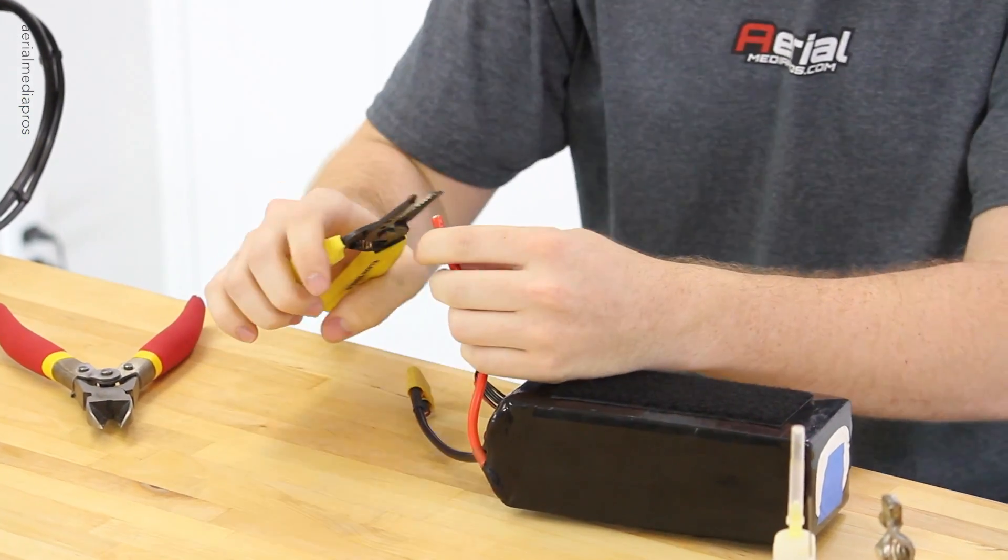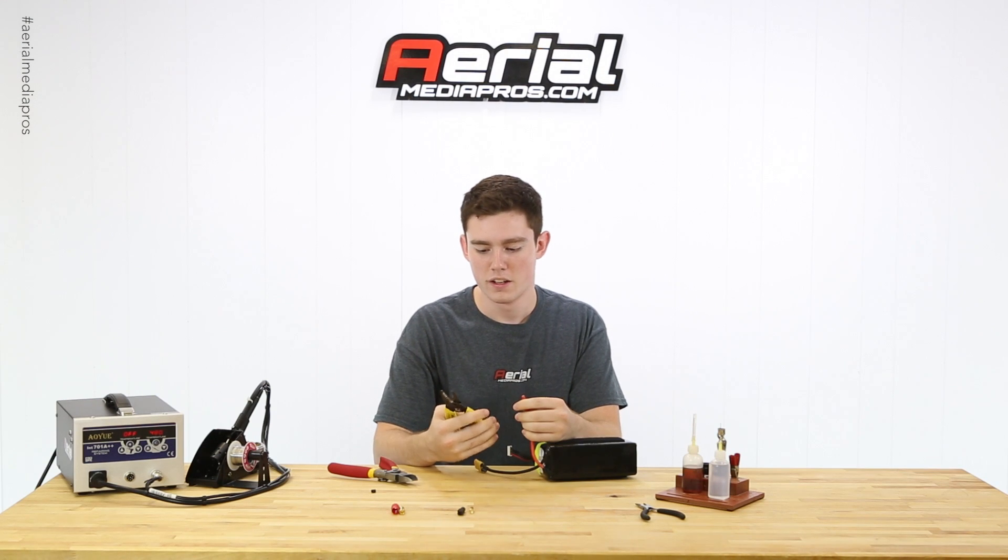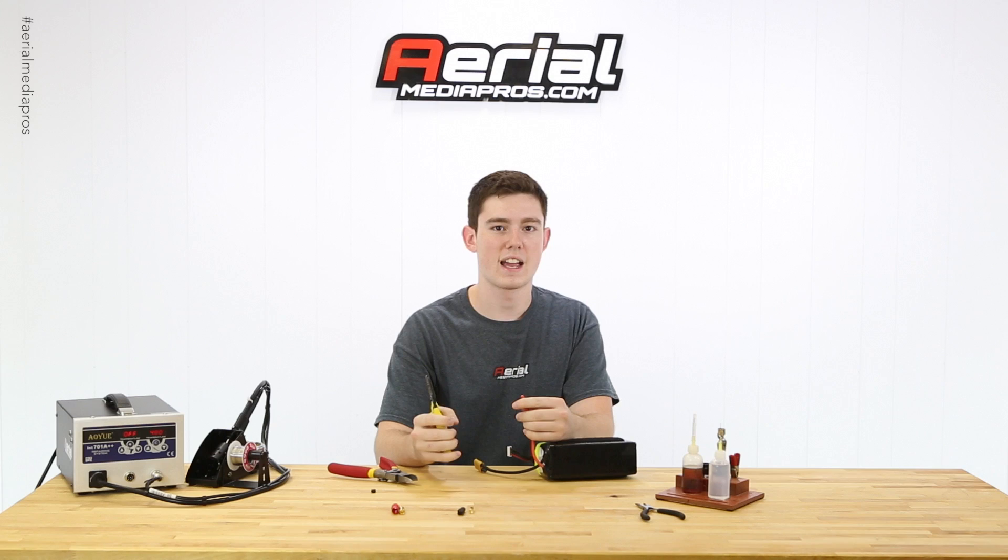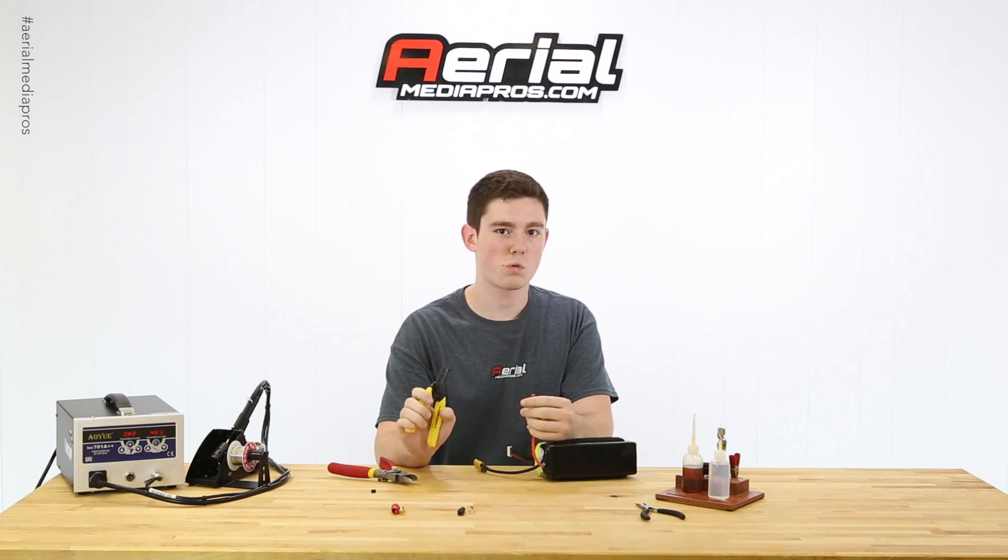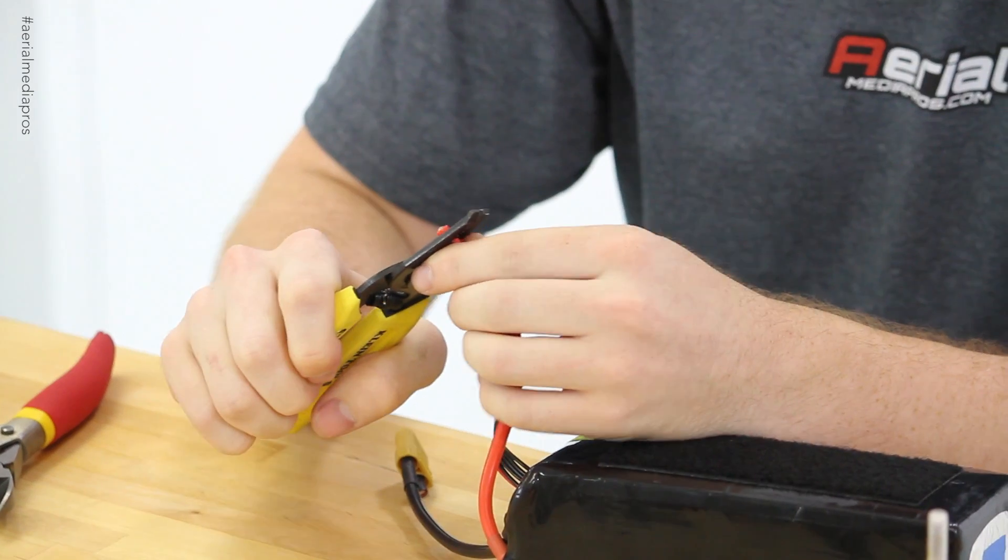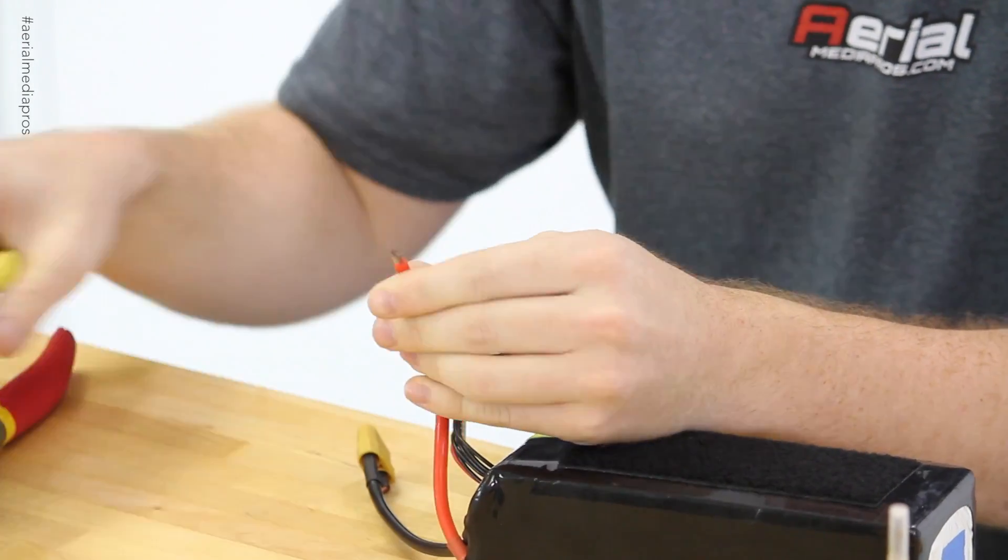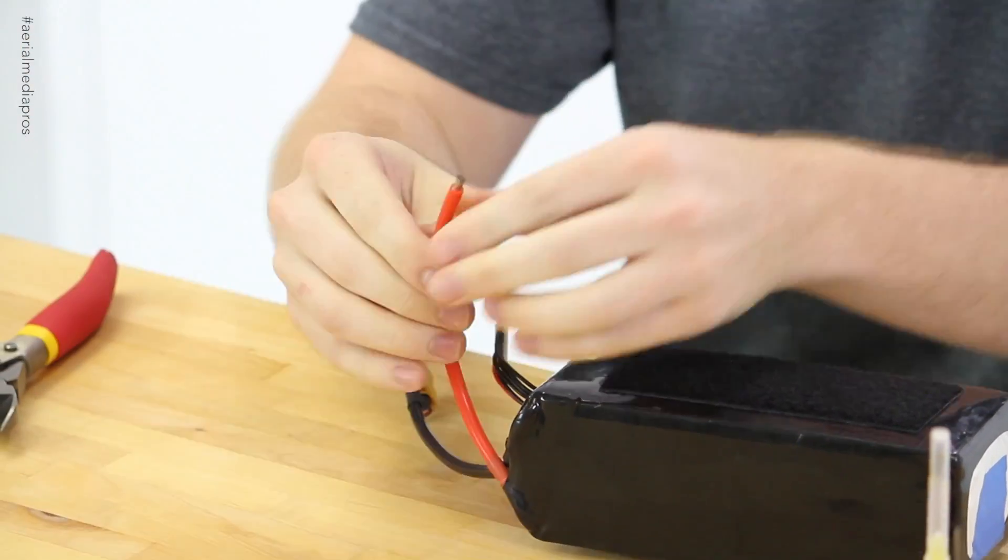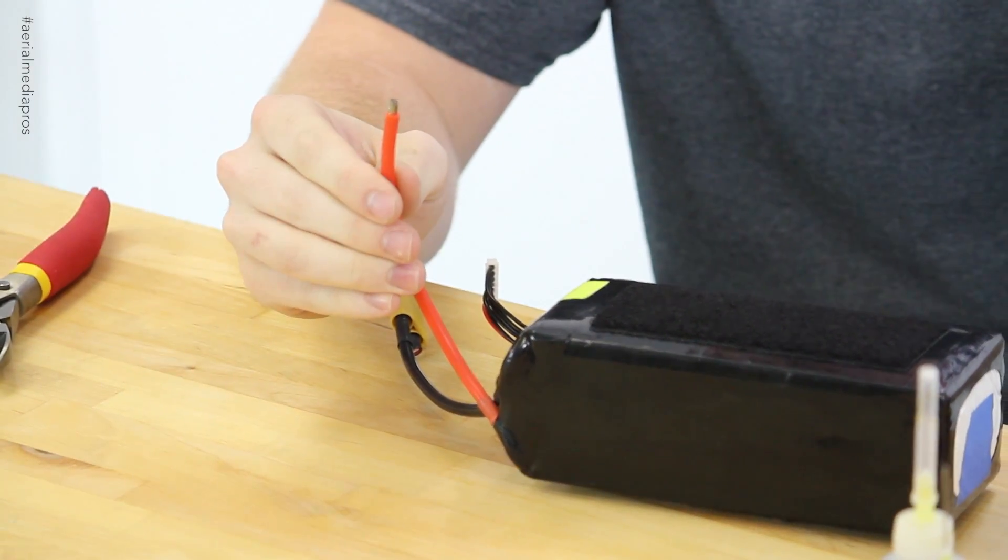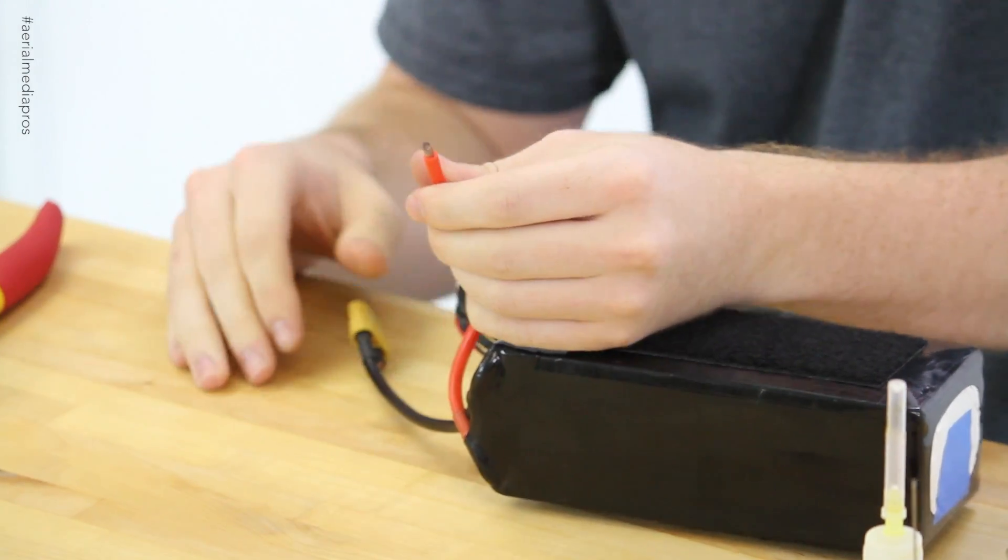Now that we have the bare lead right here, we want to take our wire strippers. Make sure you've got a wire stripper that has up to 10 gauge because 12 gauge isn't going to cut it. That's a pun intended. Now that we strip the housing, we only need to do about a quarter or maybe I would say an eighth of an inch and that's good enough right there.